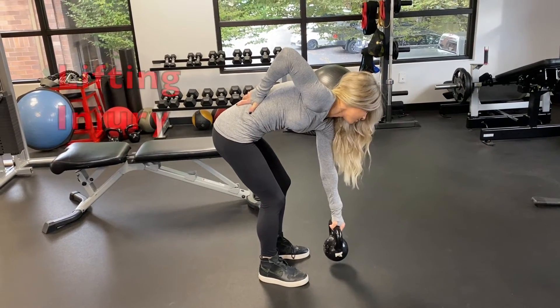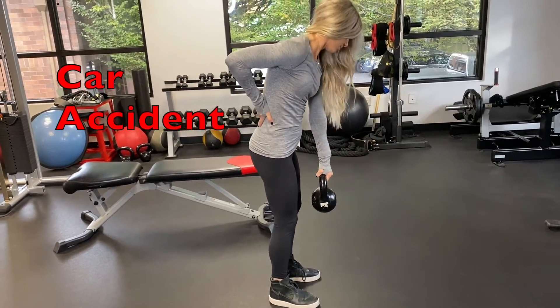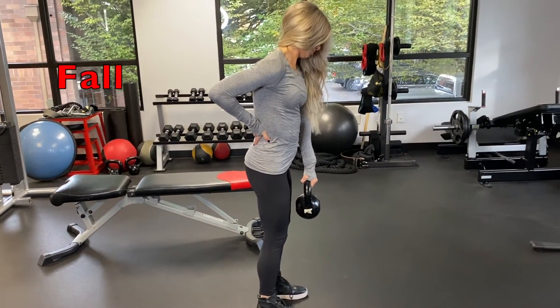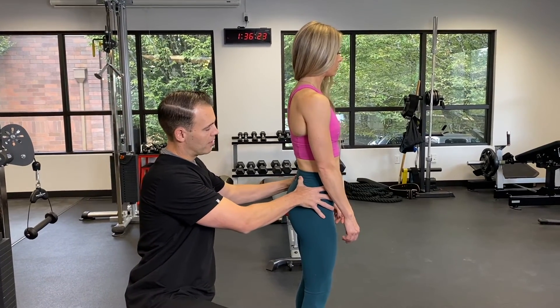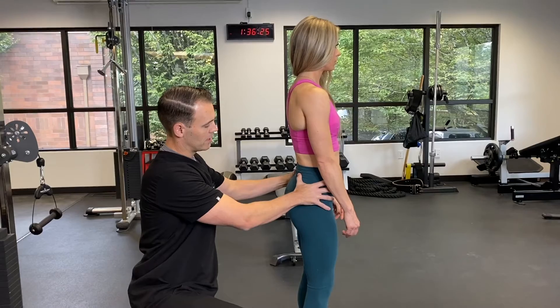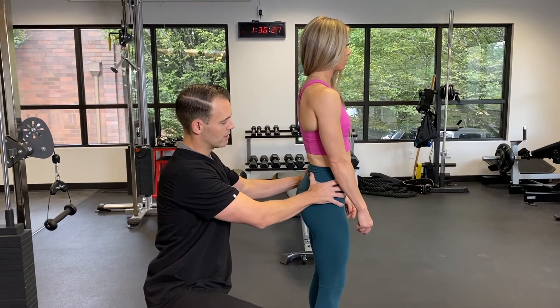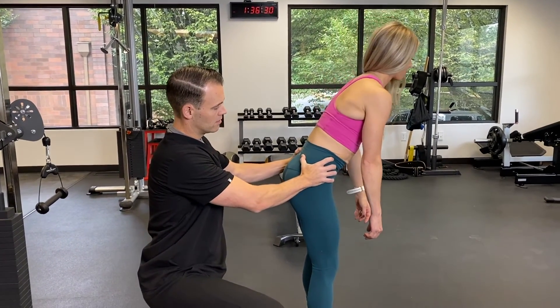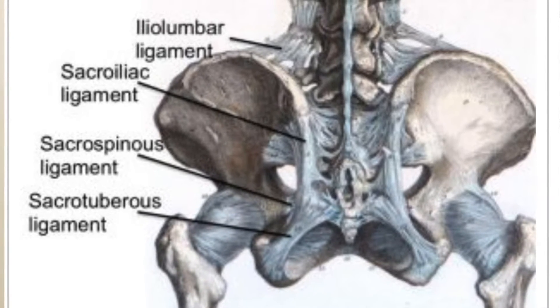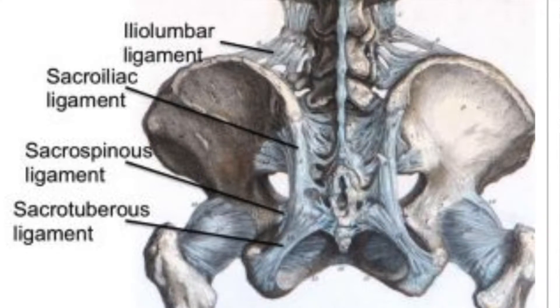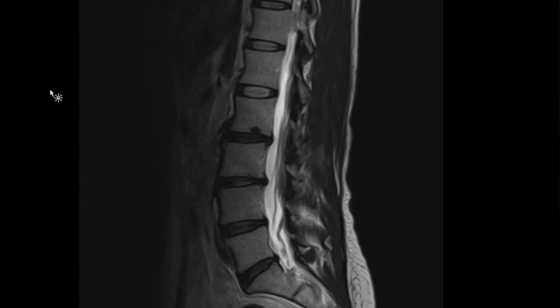Patients with sacroiliac pain sometimes will have a preceding injury like a lifting injury, car accident, or a fall onto the pelvis. Pain is often localized below the belt line. There are a variety of physical exam maneuvers to help pinpoint the location of pain and point toward the sacroiliac joint. None of these exam maneuvers are 100% diagnostic, but they can help point us toward the sacroiliac joint and sacroiliac ligaments, and maybe point us away from other structures like the intervertebral discs, facet joints, or the nerve root.